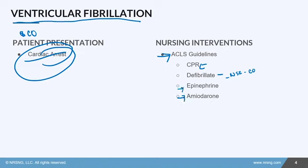We can give them epinephrine every three to five minutes and amiodarone as a bolus and then a drip, to try to get the rhythm back to normal. However, whenever people have V-fib, the best chance they have to convert to a normal sinus rhythm is getting defibrillated as soon as possible.